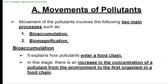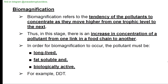Movement of pollutants in the environment involves two main processes: bioaccumulation and biomagnification. Bioaccumulation explains how pollutants enter a food chain — there is an increase in concentration of a pollutant from the environment to the first organism in the food chain. Biomagnification refers to the tendency of pollutants to concentrate as they move from one trophic level to the next. For biomagnification to occur, the pollutant must be long-lived, fat-soluble, and biologically active — e.g., DDT.